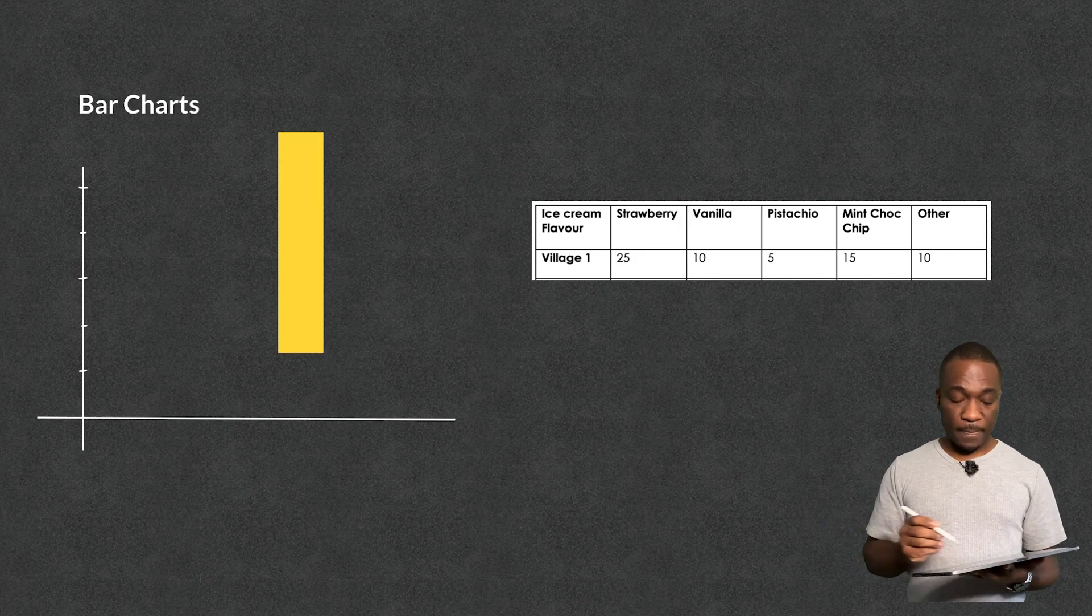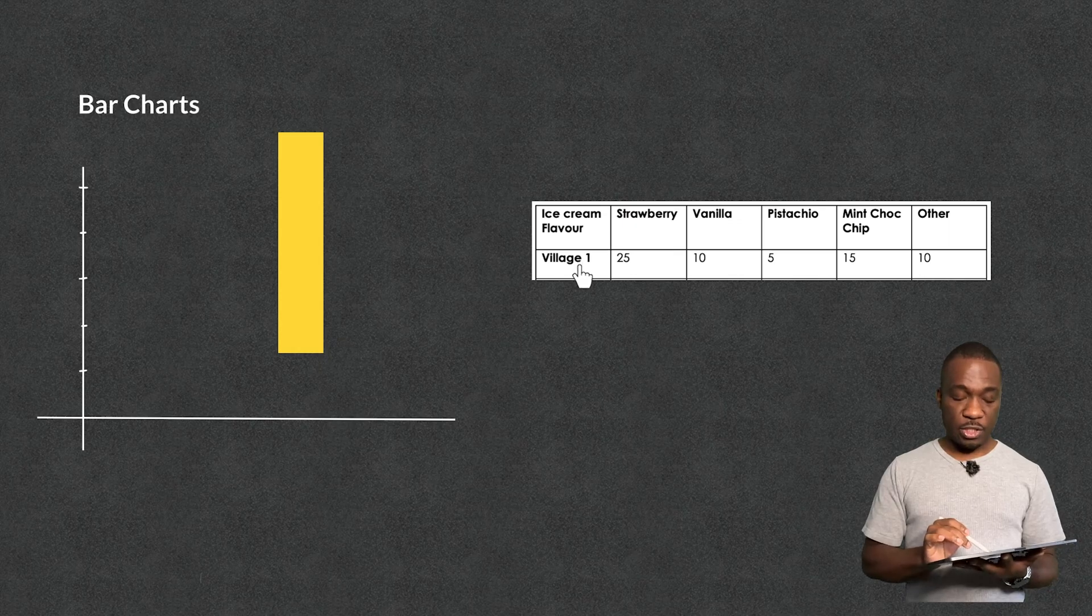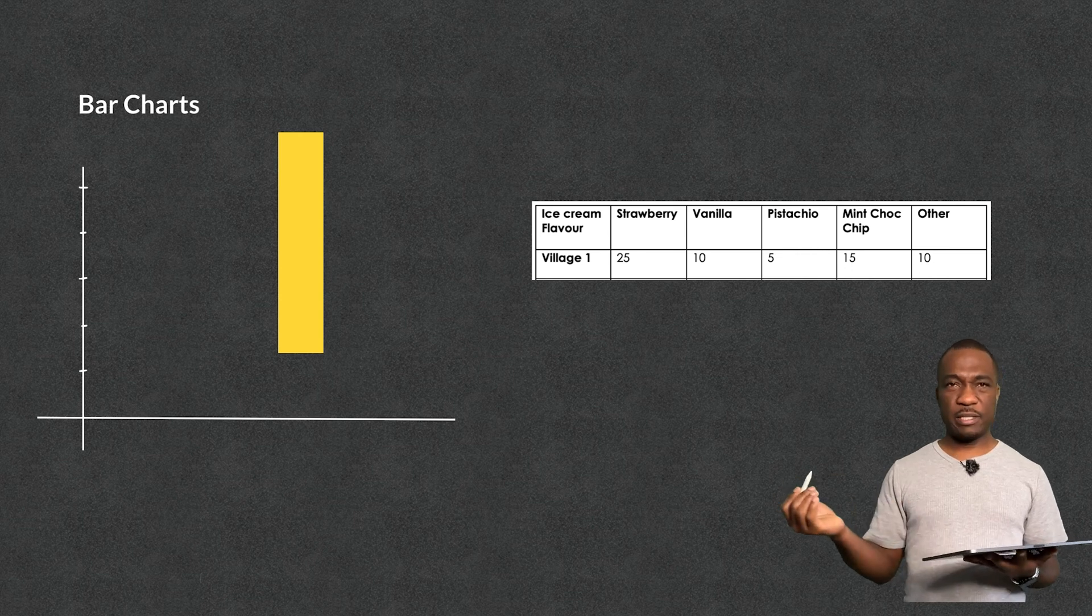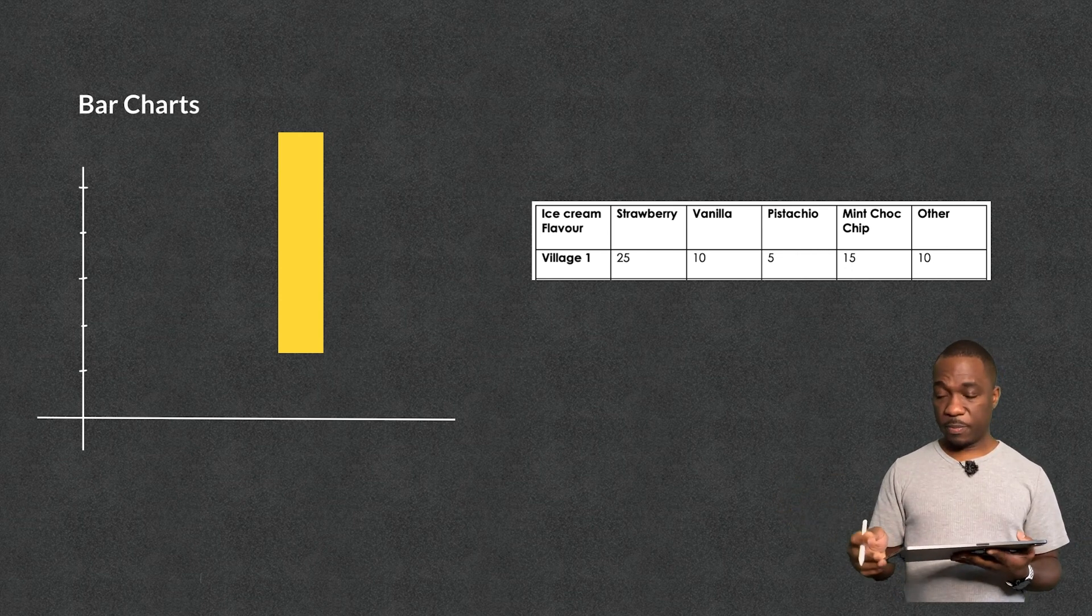So from here, you can see that when they come to the village, they normally sell on that day 25 strawberry ice creams, 10 vanilla, 5 pistachio, 15 mint chocolate chip, and then some other miscellaneous ice cream. So now I'm going to represent this information on a bar chart.